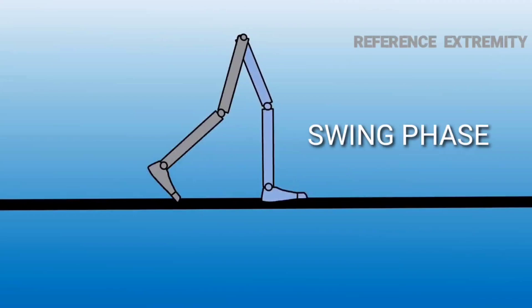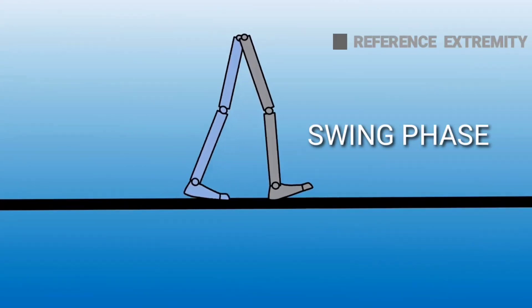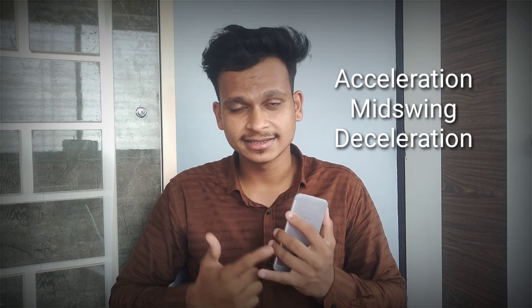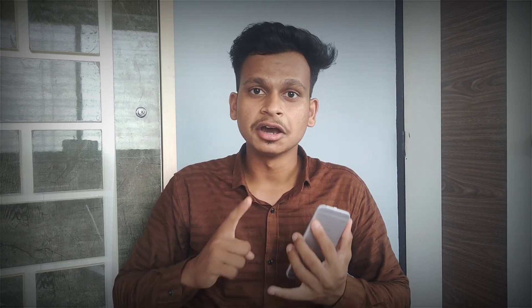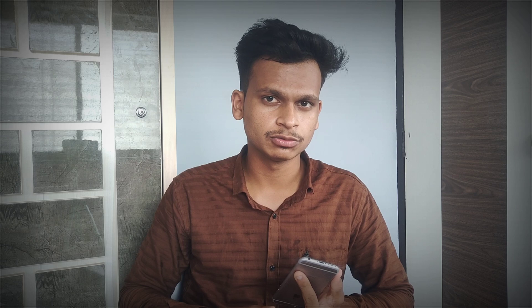Now we'll discuss the events occurring in the swing phase. The swing phase consists of: acceleration, mid swing, and deceleration. To understand and memorize it properly, we can call it early swing, mid swing, and late swing.